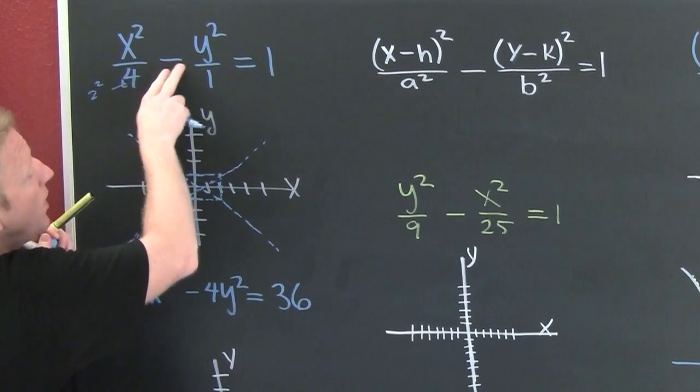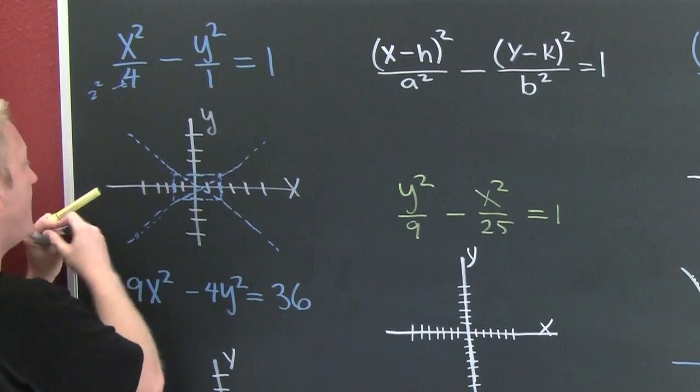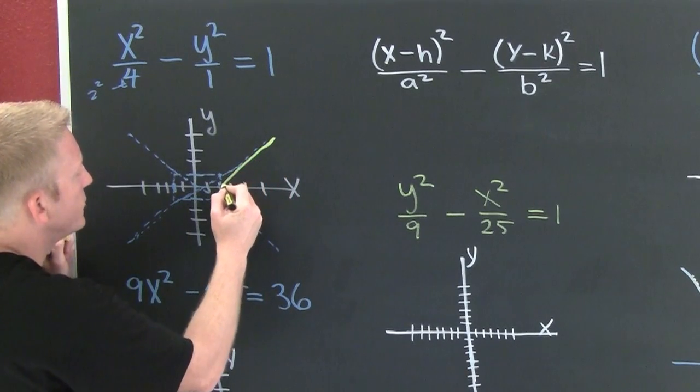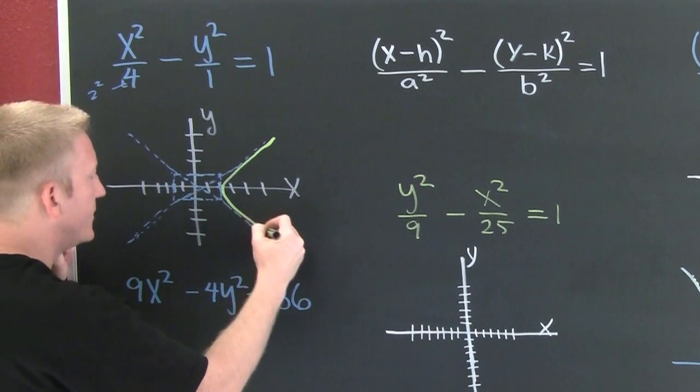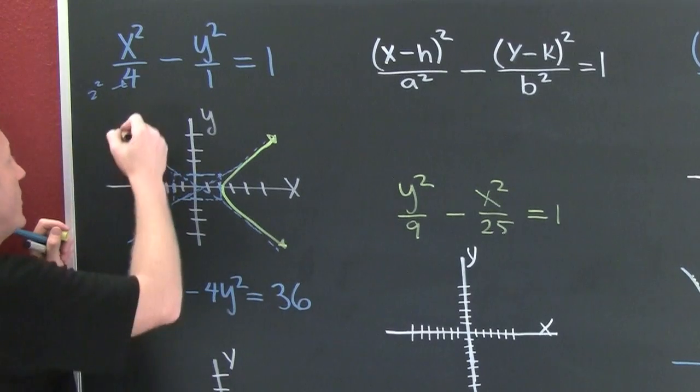Now the minus sign's on Y, so it opens away from Y, and your hyperbola is going to touch the vertices and go out in both directions like that, but it also does it on this side.